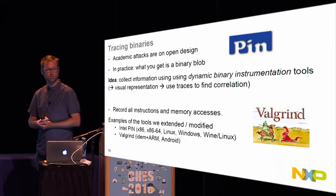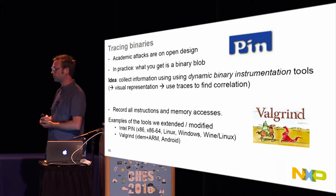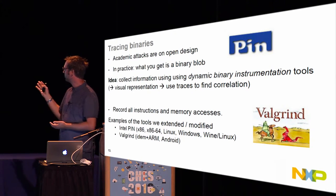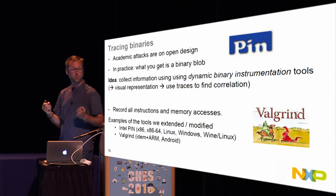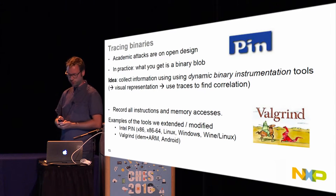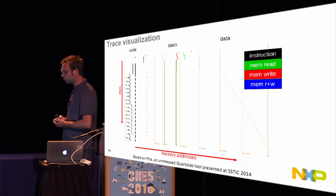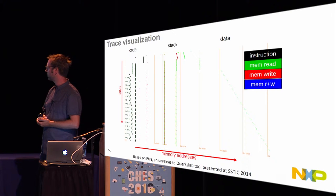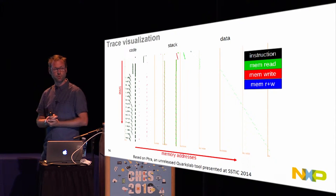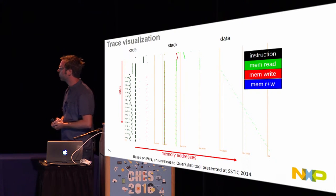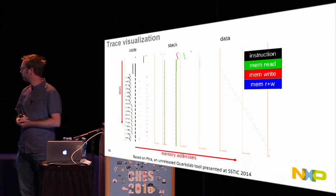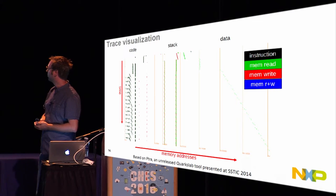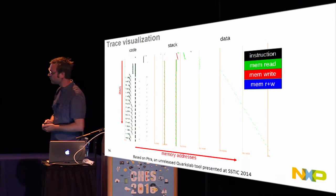We collect this information using dynamic binary instrumentation tools — we wrote plugins for Pin, a DBI tool for Intel, and Valgrind. Most software engineers have worked with Valgrind for debugging and memory leak analysis, but these tools can do much more. We extended these frameworks to get software traces. We also created a visualization GUI: on the y-axis you see the execution time of your software binary, and on the x-axis you see the memory being accessed — instructions in black, memory reads and writes in green and red.